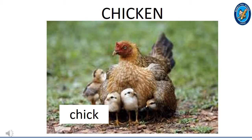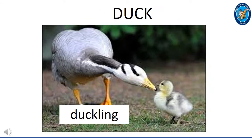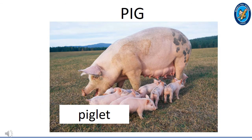This is a chicken. The young one of a chicken is called a chick. Can you count the number of chicks you see on the screen? I can see one, two, three, four — four chicks on the screen. This is a duck, and the young one of a duck is called a duckling.